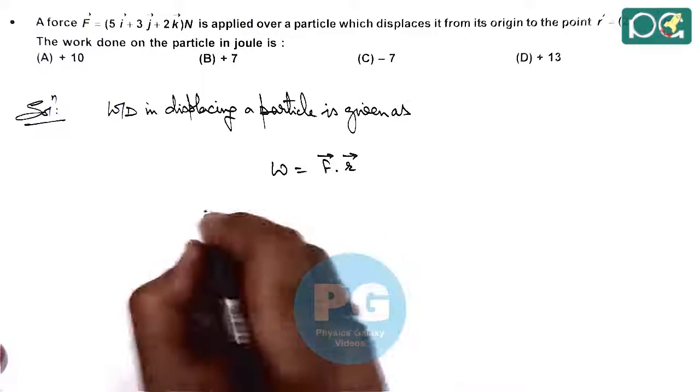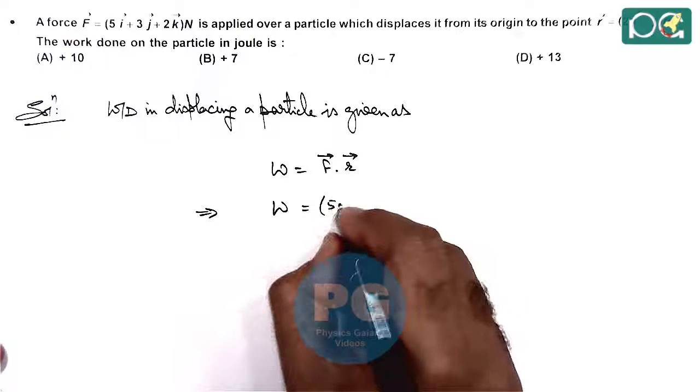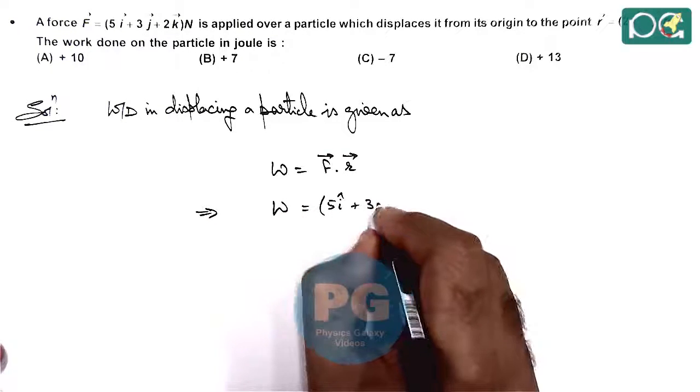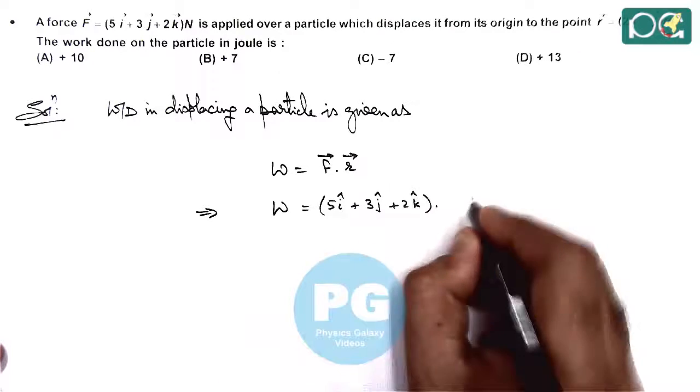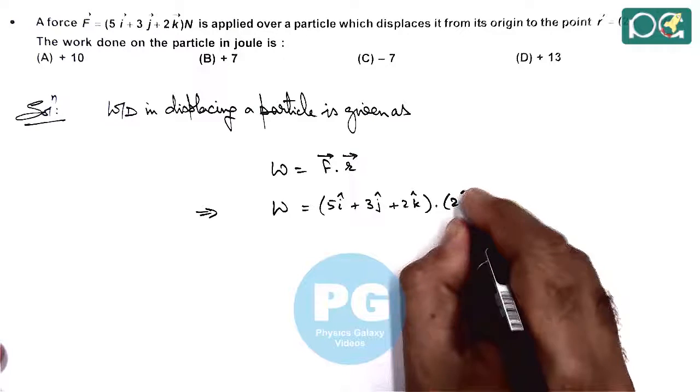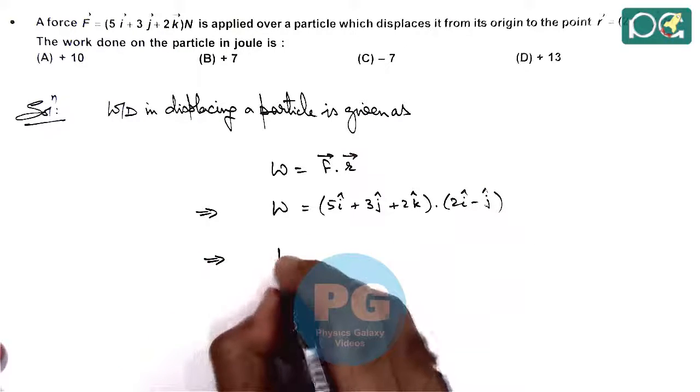To calculate numerically, we take the dot product of 5i + 3j + 2k with 2i - j. The value of this dot product is calculated as follows.